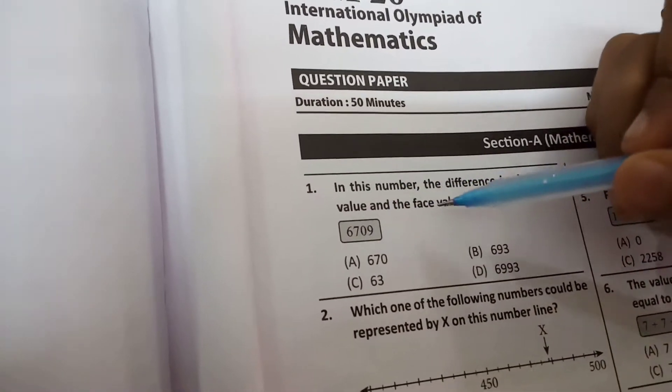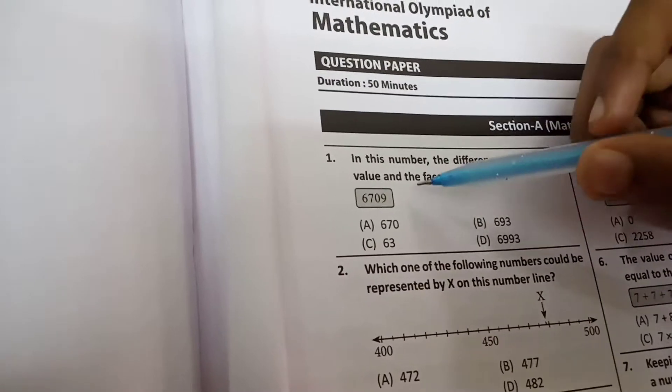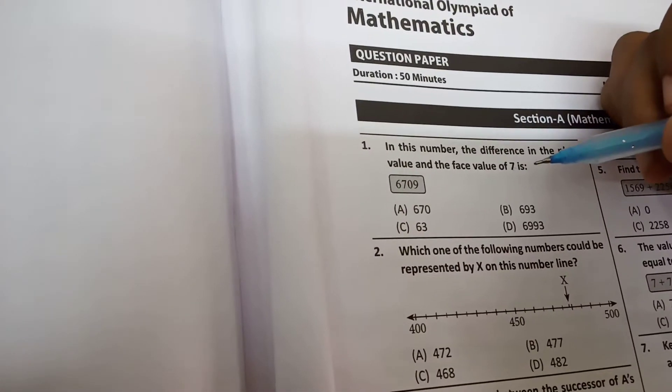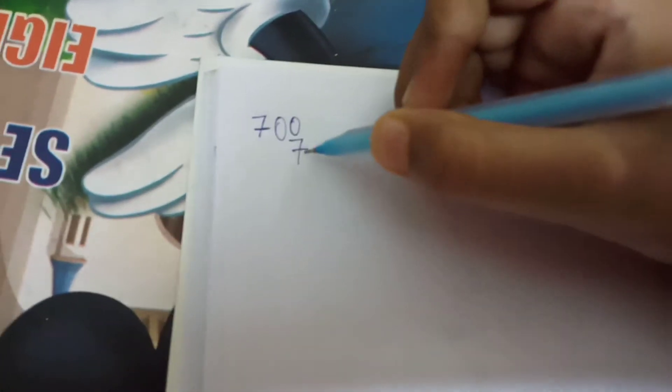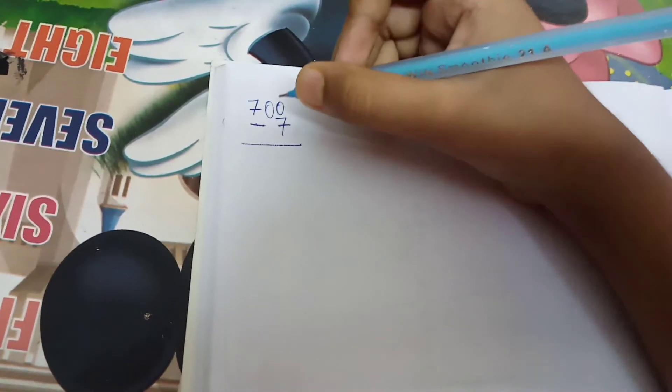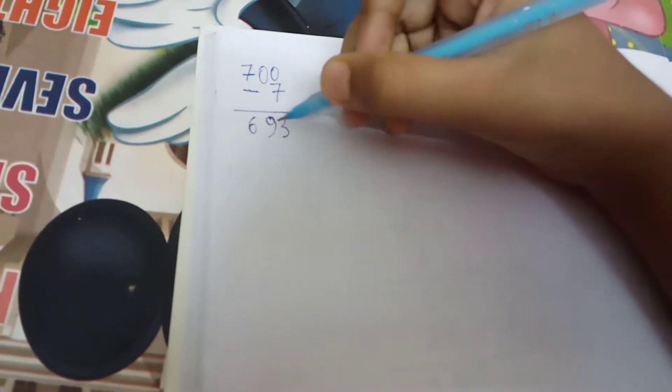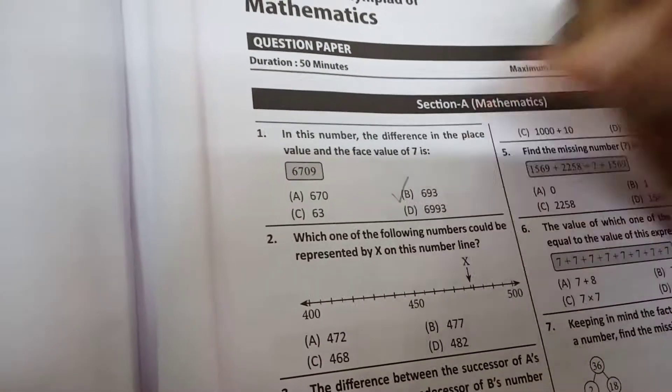Now we need to find the difference in the place value and the face value of 7. So how to find difference in two numbers? You just need to subtract the smaller number from the bigger number to get the difference of those two numbers. So 700 is bigger, so I will subtract 7 from 700. So you all know how to do subtraction. So look, the answer is 693. So B is the answer.